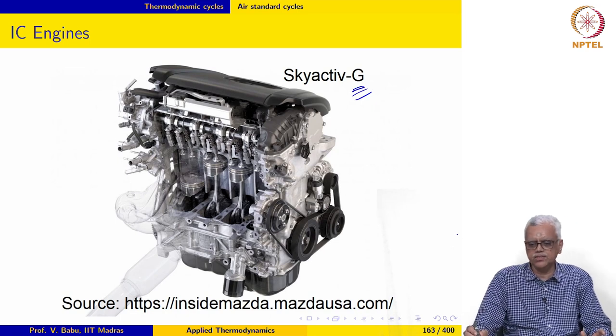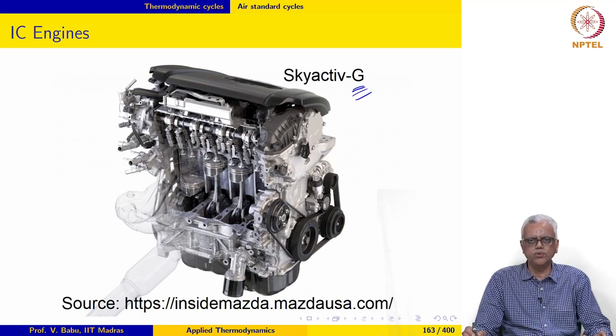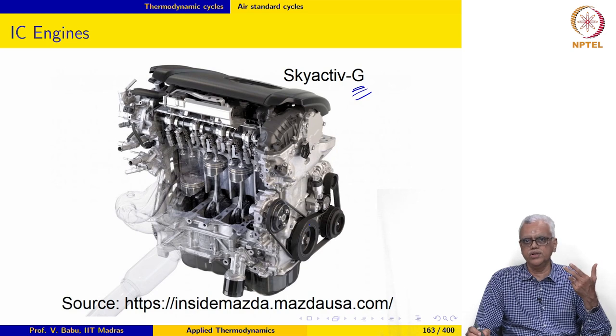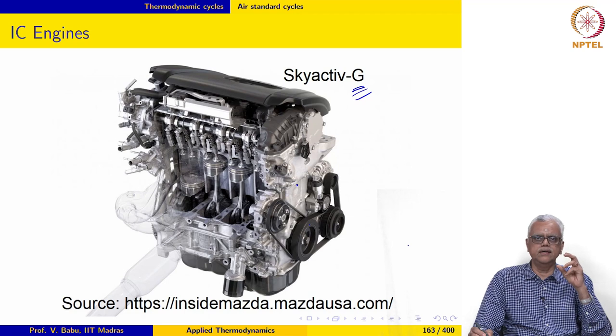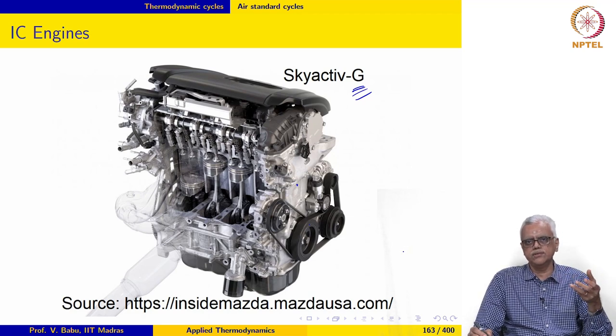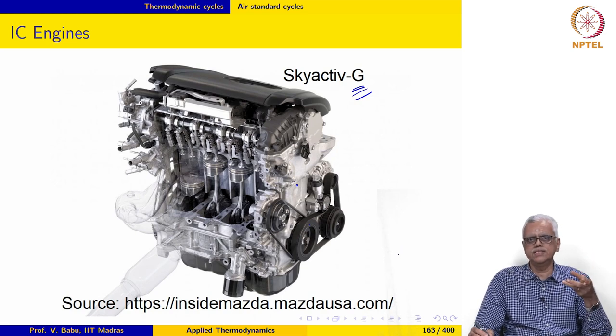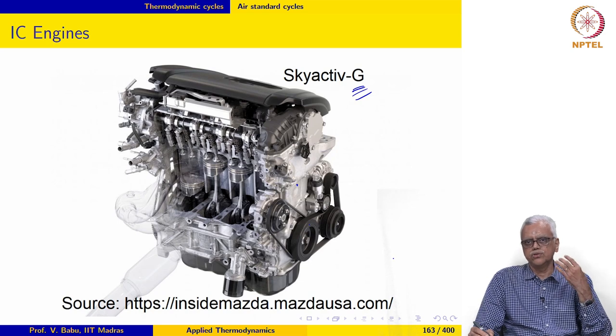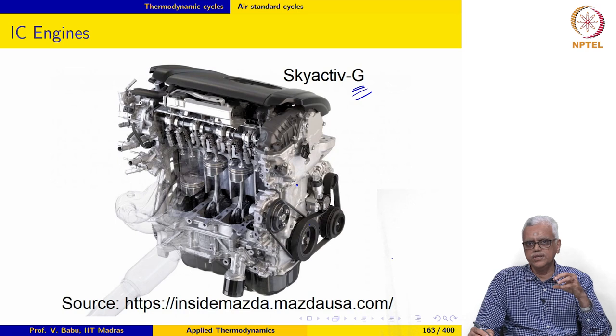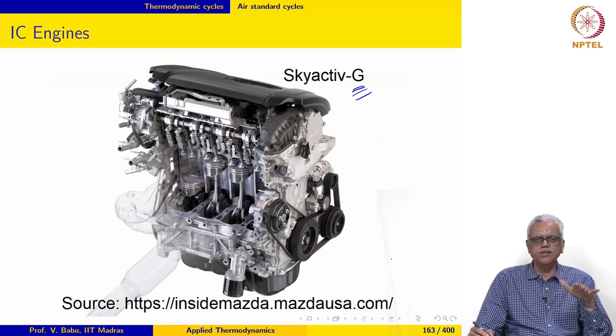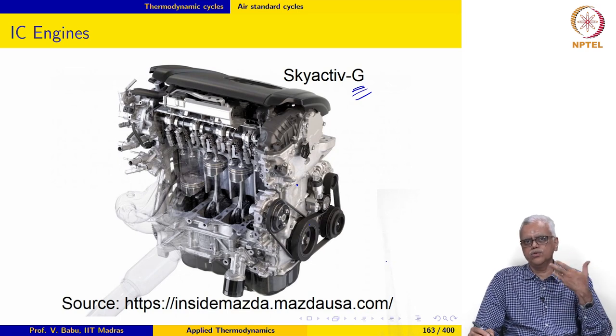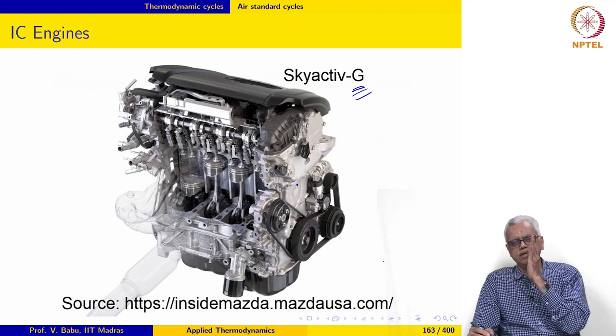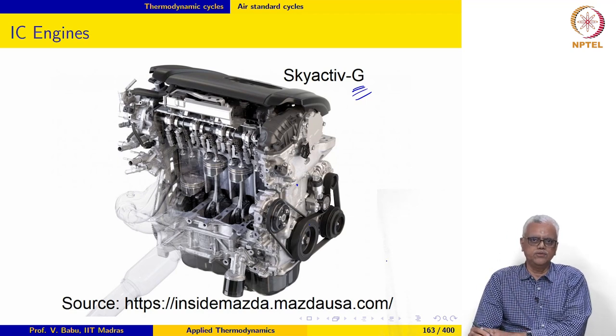We said that Otto cycle we cannot go beyond 10 because you encounter the knocking problem, auto ignition or knocking problem. Now, this engine uses in-cylinder sensors and onboard computers and other things to continuously monitor the equivalence ratio, amount of fuel, detect knocks actively, and then adjust the fuel injected or the air-fuel ratio so that the knocking is never allowed to progress. The auto ignition is never allowed to progress into a knock. It constantly monitors in-cylinder parameters and then controls the amount of fuel, air and so on, so that the engine, although operating at a compression ratio of 14, still operates in a stable manner. The computer continuously does this.